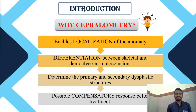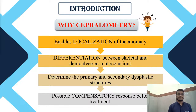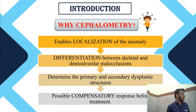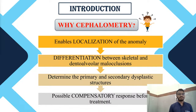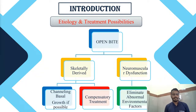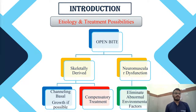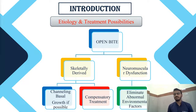So why is there a need for cephalometry? Cephalometry enables the localization of the anomaly. It helps differentiate between skeletal and dental alveolar malocclusions. It determines the primary and secondary dysplastic structures, and it also shows the possible compensations that occur before the commencement of treatment. It is also important to know the etiology and what therapeutic possibilities are available.